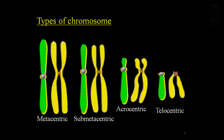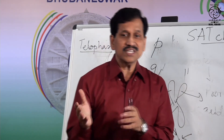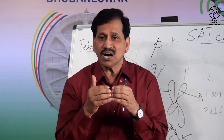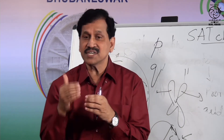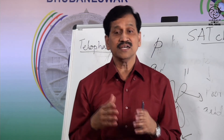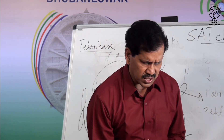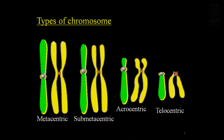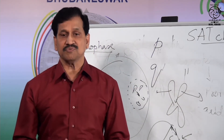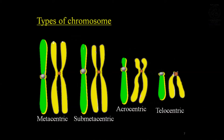In the acrocentric chromosome, the centromere is present near the terminal end — not exactly at the terminal end but near it. Due to this, one arm is very small and one arm is very long. In the telocentric chromosome, the centromere is located at the terminal end, so there is only one arm present, and a small satellite-like structure will also be present. Based on the position of the centromere, chromosomes are classified into four types: metacentric, sub-metacentric, acrocentric, and telocentric.